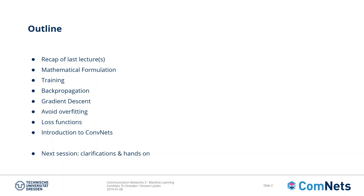First we will start with a short recap of the last lectures, then we will look into mathematical formulation and what training means in terms of neural networks. This makes heavy use of the backpropagation algorithm, and of course again we look at gradient descent, because all of the machine learning optimization problems rely on gradient descent. We will shortly talk about how to avoid overfitting in neural nets, look at loss functions, and finish with a short introduction to convolutional neural networks.